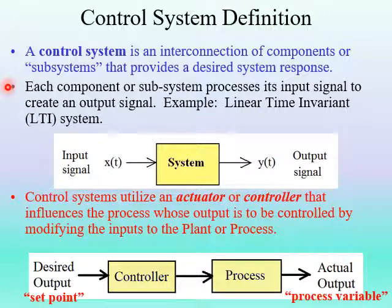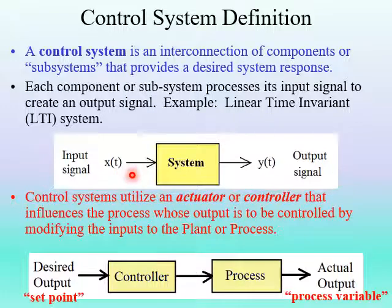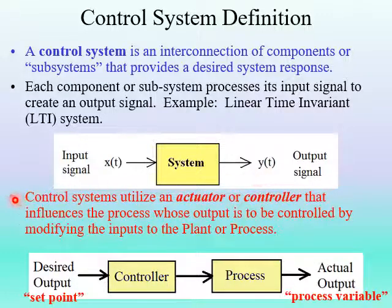We're going to be working with linear time invariant systems, so we have input signals X coming in from the left and output signals Y coming out on the right. Control systems utilize an actuator or controller that influences the process whose output is to be controlled by modifying the inputs to the process, or plant as it's sometimes called.